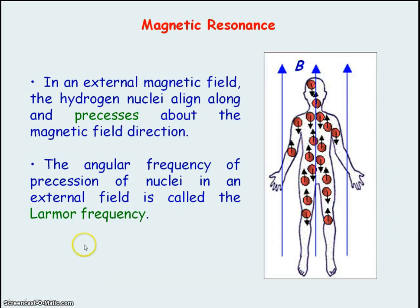The angular frequency of precession of the hydrogen nuclei in an external magnetic field is called the Larmor frequency, and the Larmor frequency is directly proportional to the flux density of the magnetic field.